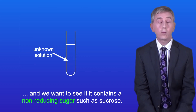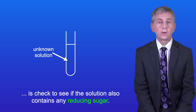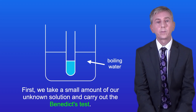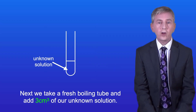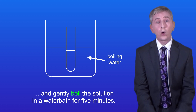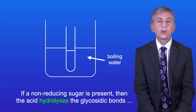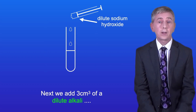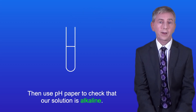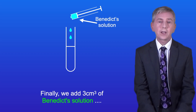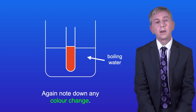To test a solution for a non-reducing sugar such as sucrose, first check whether the solution also contains any reducing sugar by carrying out the Benedict's test and noting any colour change. Next take a fresh boiling tube and add three centimeters cubed of the unknown solution, then add three centimeters cubed of dilute hydrochloric acid and gently boil in a water bath for five minutes. If a non-reducing sugar is present, the acid hydrolyzes the glycosidic bonds releasing the monosaccharides. Then add three centimeters cubed of dilute alkali such as sodium hydroxide solution and use pH paper to confirm the solution is alkaline, because the Benedict's test cannot work under acidic conditions. Finally add three centimeters cubed of Benedict's solution, heat in boiling water for five minutes, and note any colour change.